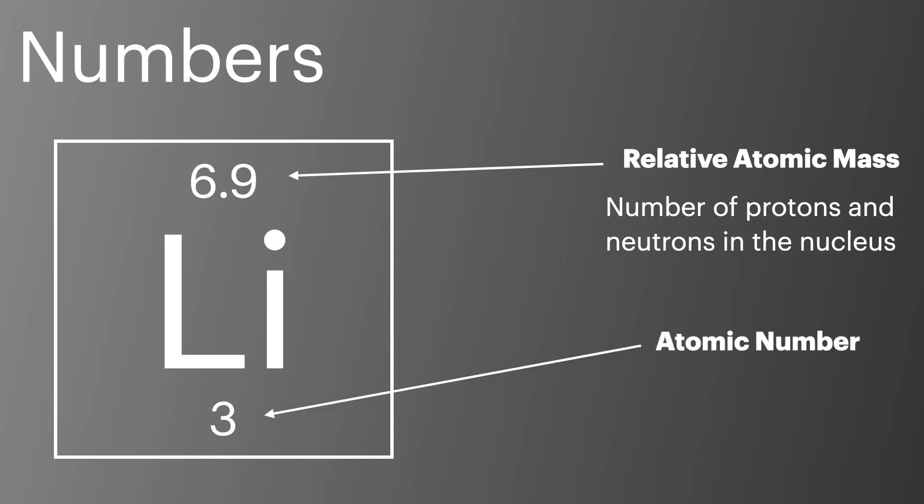The atomic number is the smaller of the two numbers and is the number of protons present in the nucleus. This is equal to the number of electrons on the atom.